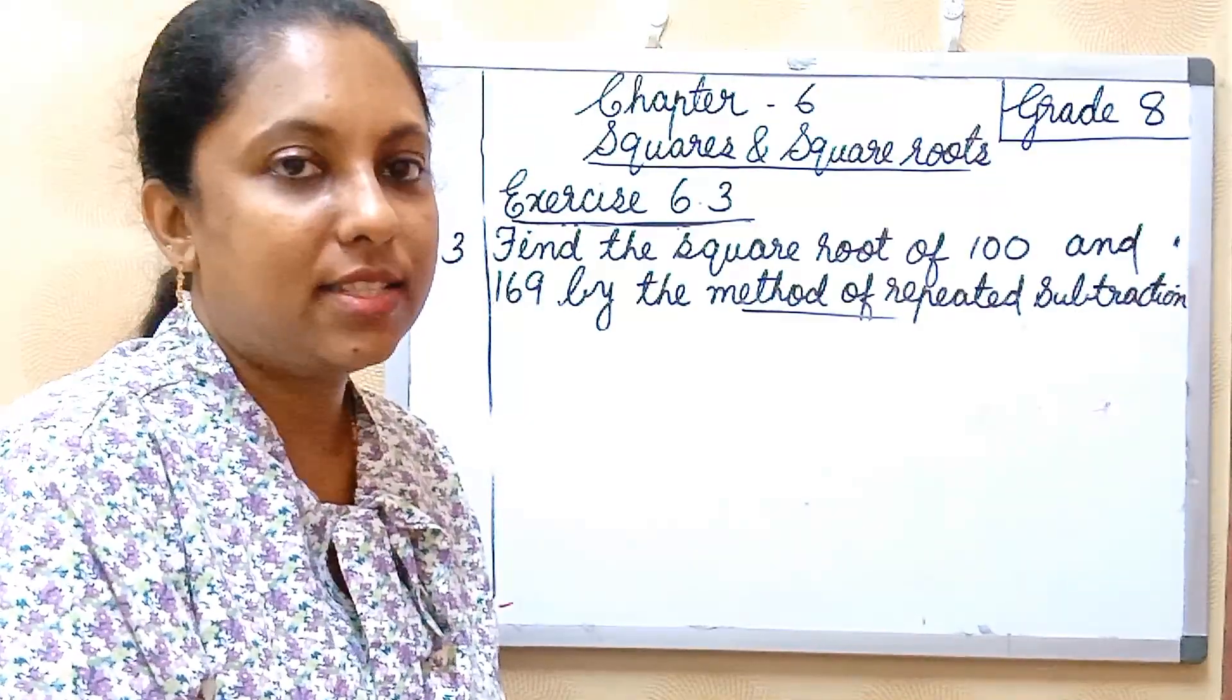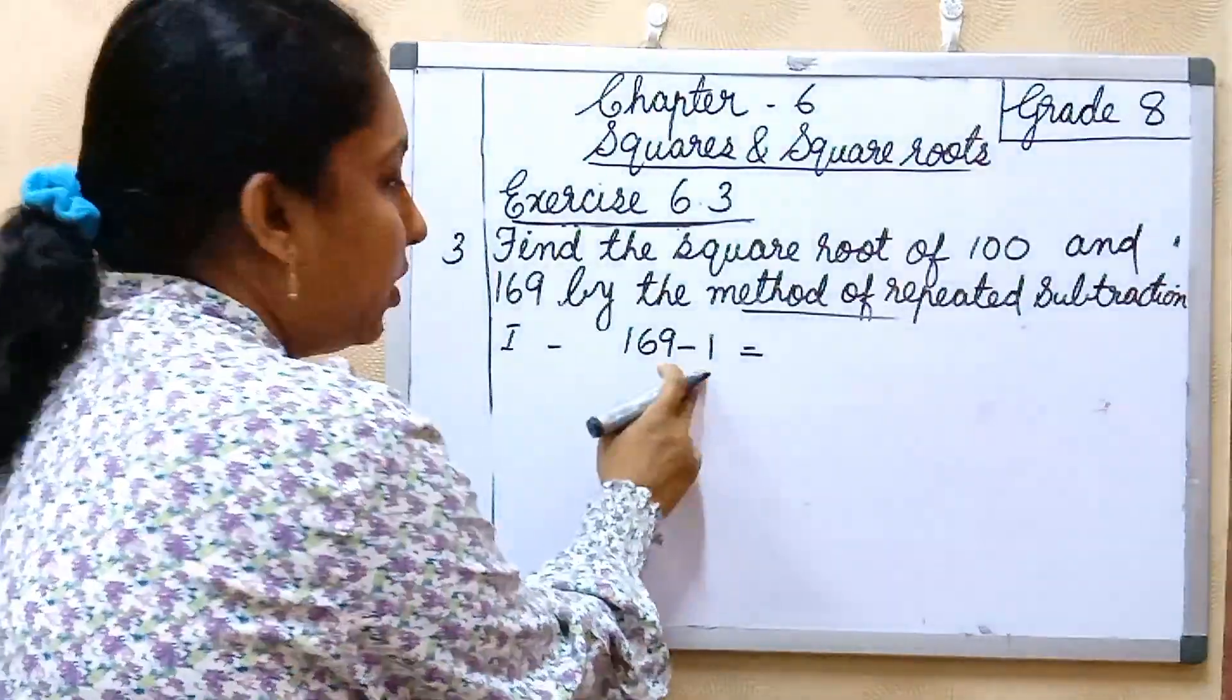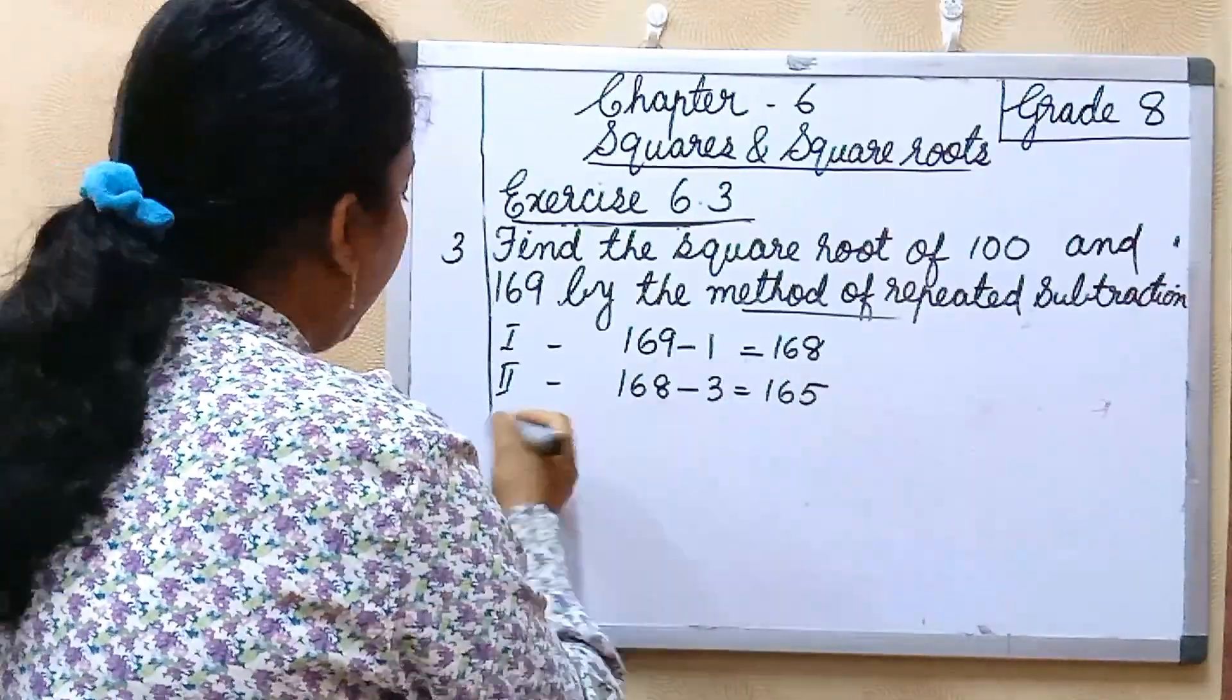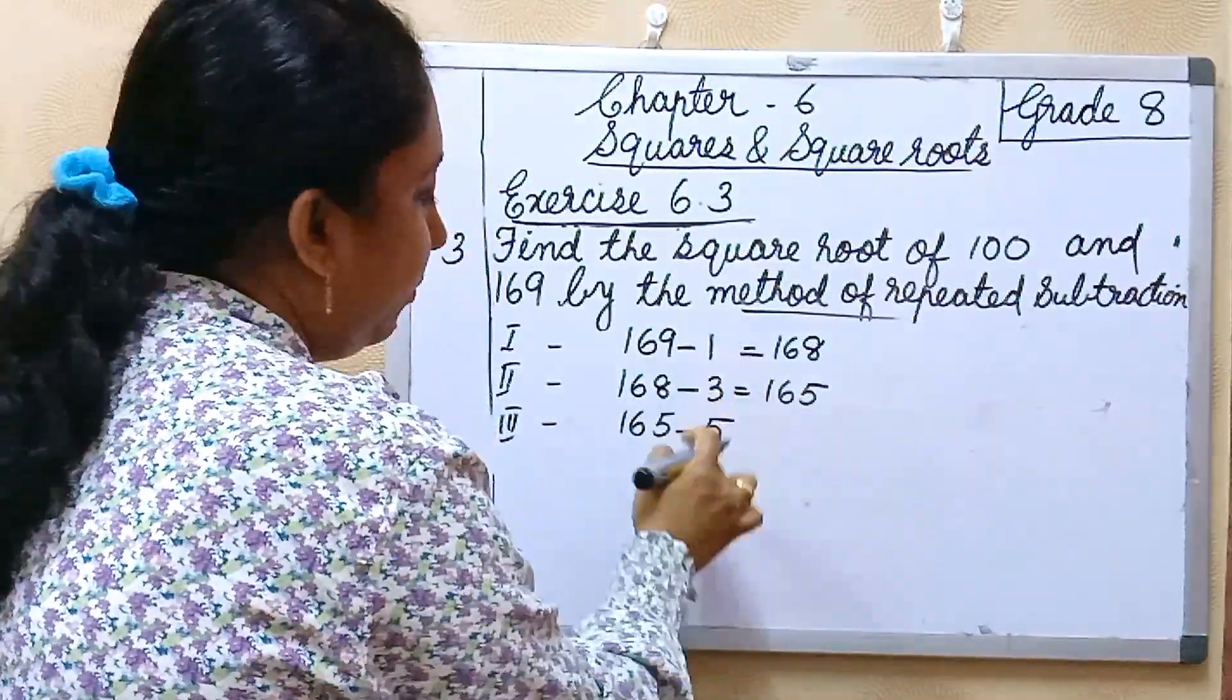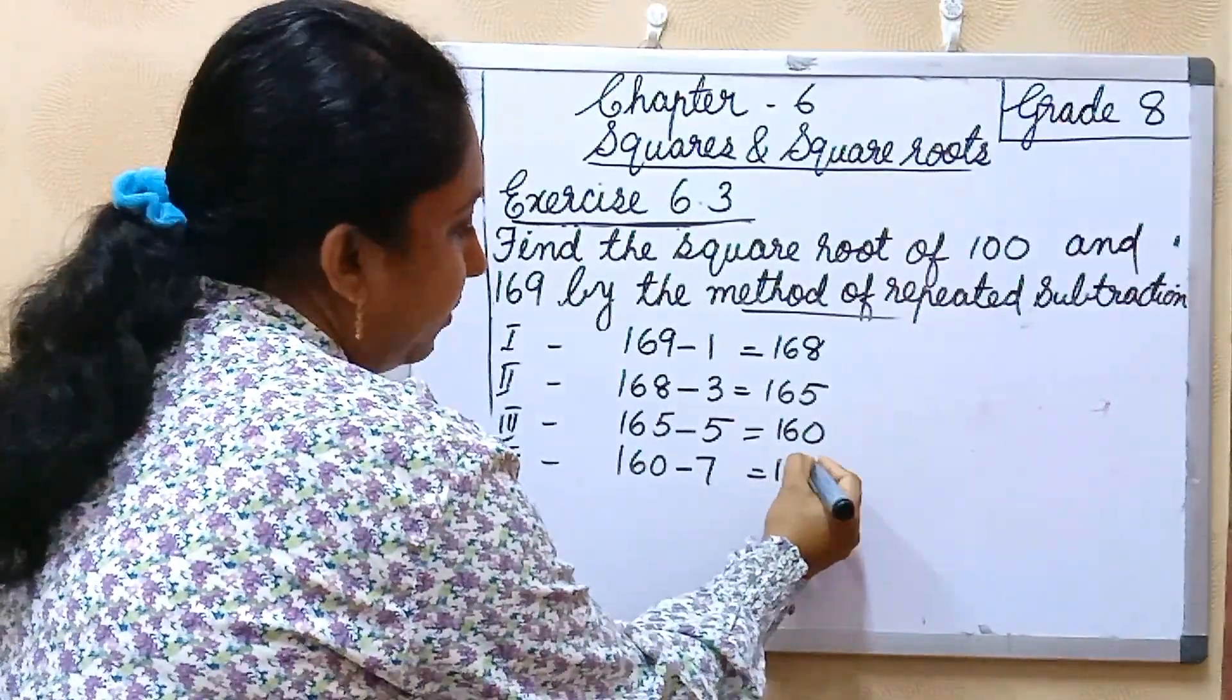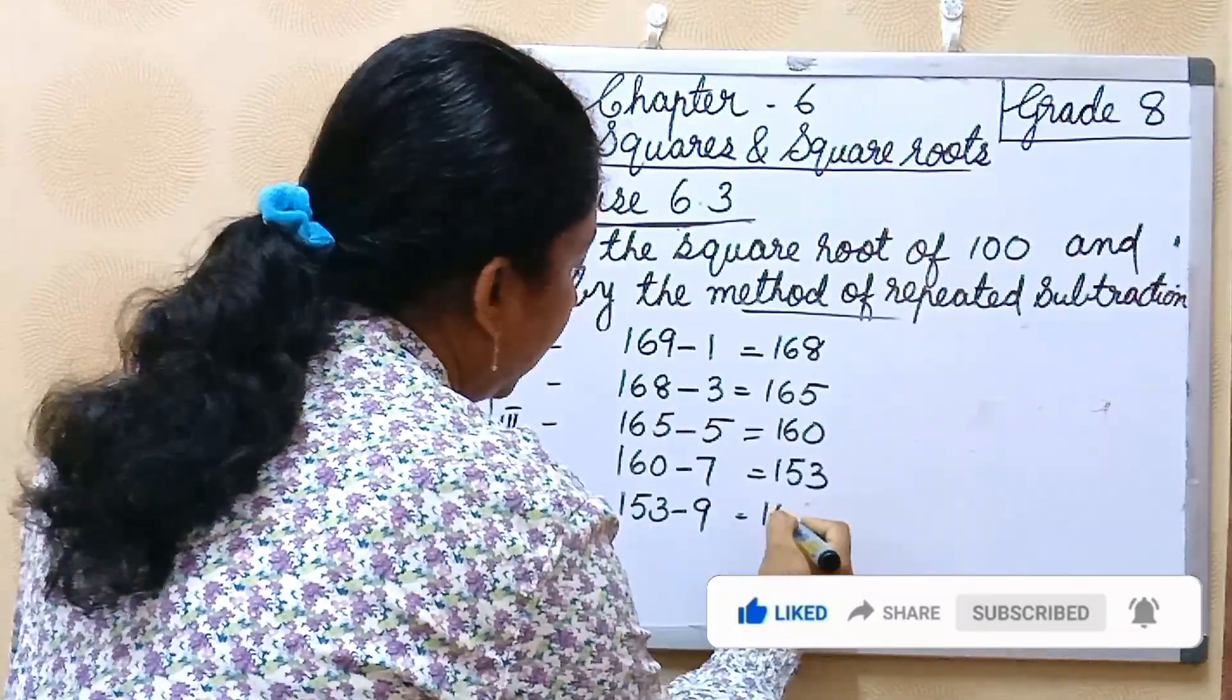Next number is 169. 169 also same way we can do. First step 1, 169 minus 1, 1 is the first odd number, is 168. Second step, 168 minus 3, that is 165. Then third step, 165 minus 5, 160. Step 4, 160 minus 7, that is 153. Fifth step, 153 minus 9, that is 144.